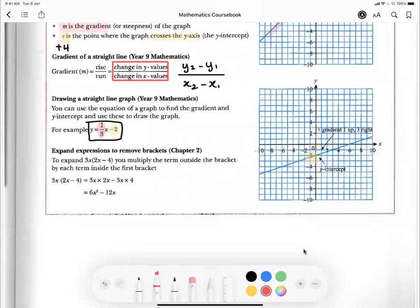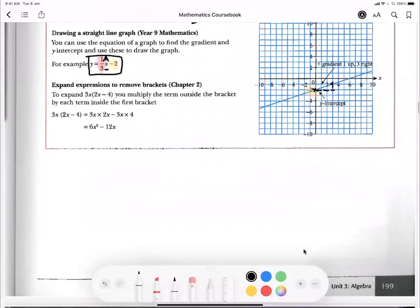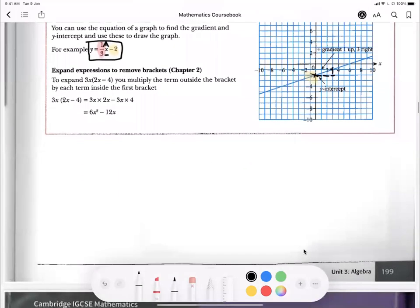Means your change in y go up by one, your x go right by three. So here, one, two, three, go up by one. So you can already have one point here, one point here, then you can draw your straight line over it. Or you can just put in the value for x, any value, then you can find out what is y.